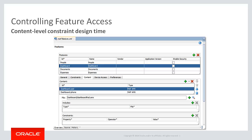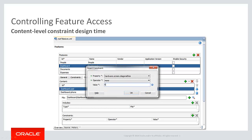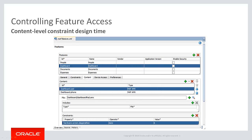Here I am back in the maffeature.xml file, now in the content tab. You can see that for the dashboard feature, I've defined two possible pages: dashboard-pad and dashboard-phone. If I select dashboard-pad, I can create the constraint for when this page should be used by clicking the green plus sign to create a new constraint. In this case, the diagonal size of the screen is more than six. I'm not restricted to static values — I can use expression language to reference a value that comes from a Java bean. So for this dashboard feature, I will use an AMX page designed for the tablet if the diagonal size of the screen is greater than six; otherwise, I default to using the dashboard-phone page.